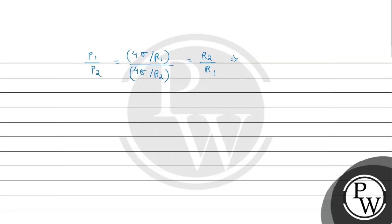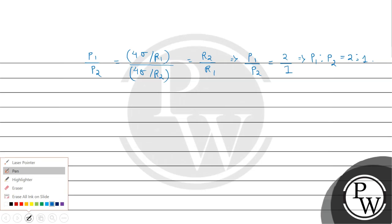Since in the question R1 is to R2 is given as 1 is to 2, from here we get the value of ratio of excess pressure is P1 divided by P2 equals to 2 divided by 1, which we can write as P1 is to P2 equals to 2 is to 1. So this is the ratio of excess pressure.